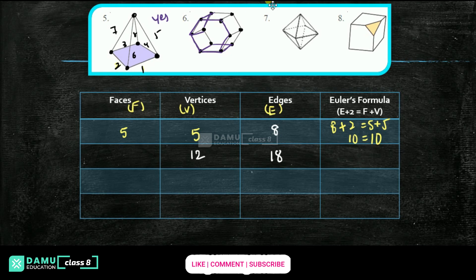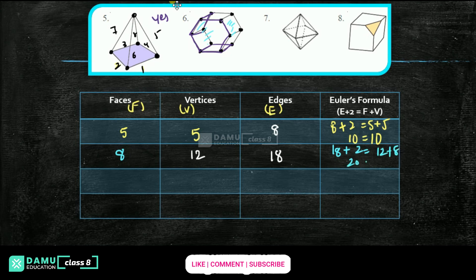Faces for the hexagonal prism: front 1, back 1 — that's 2. Then surrounding: 6 faces, so 6 plus 2 = 8 faces. Checking Euler's formula: 18 plus 2 = 20; vertices plus faces = 12 plus 8 = 20. So 20 equals 20 — yes, it is also applicable.